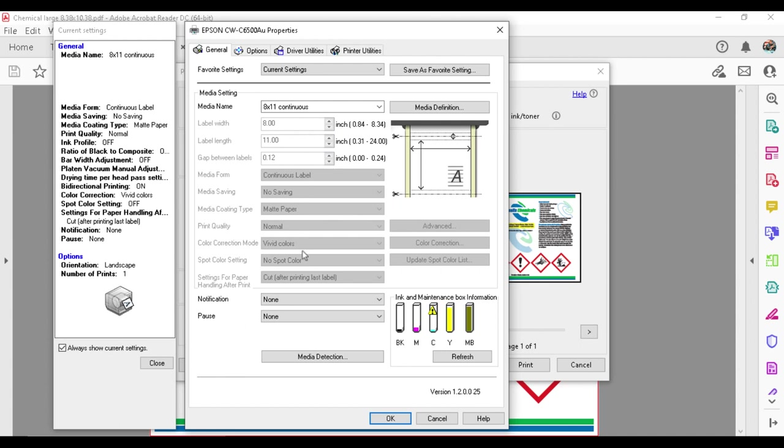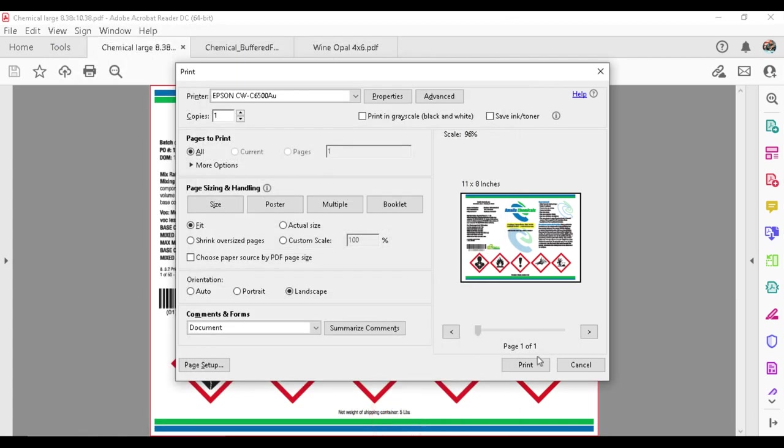Once again, I've saved my settings. This time, it's matte paper. I have print quality normal. So this will be a little bit faster.